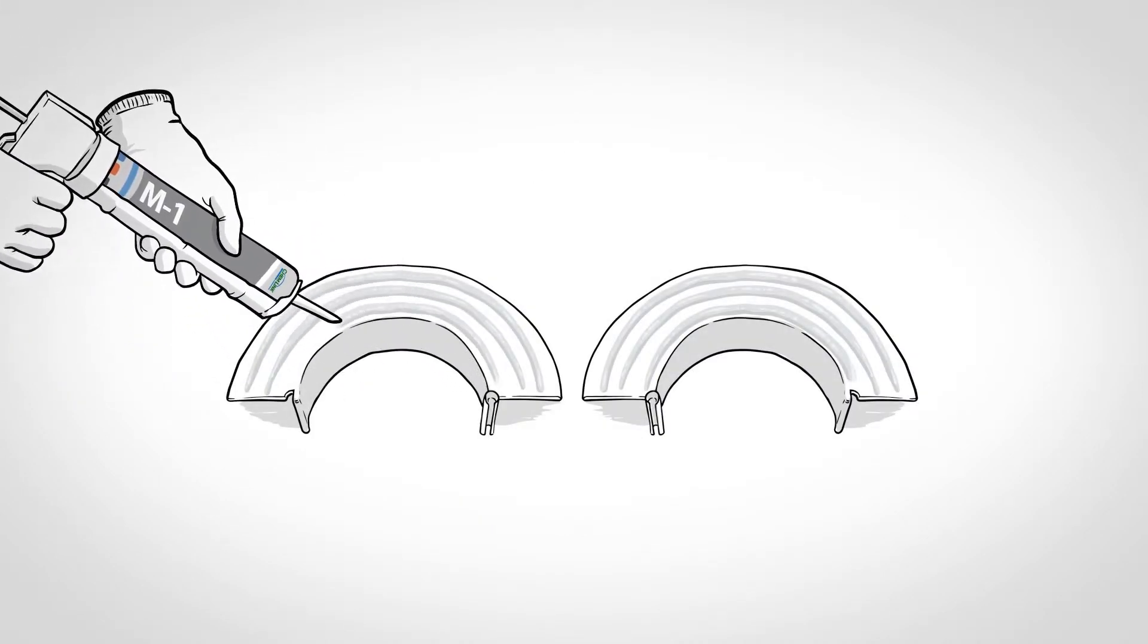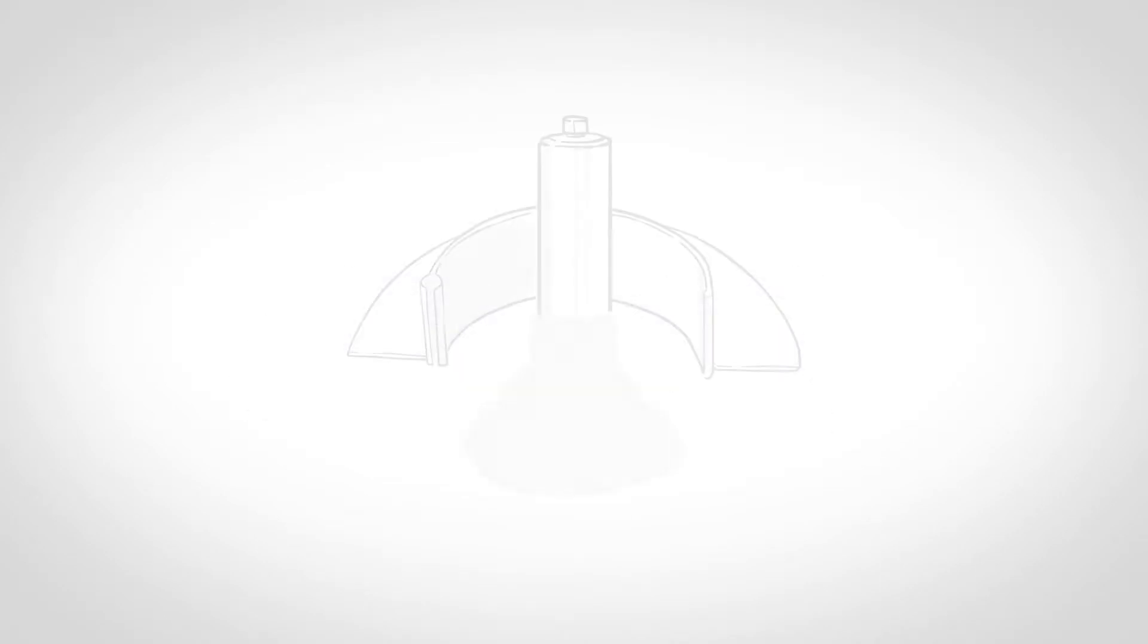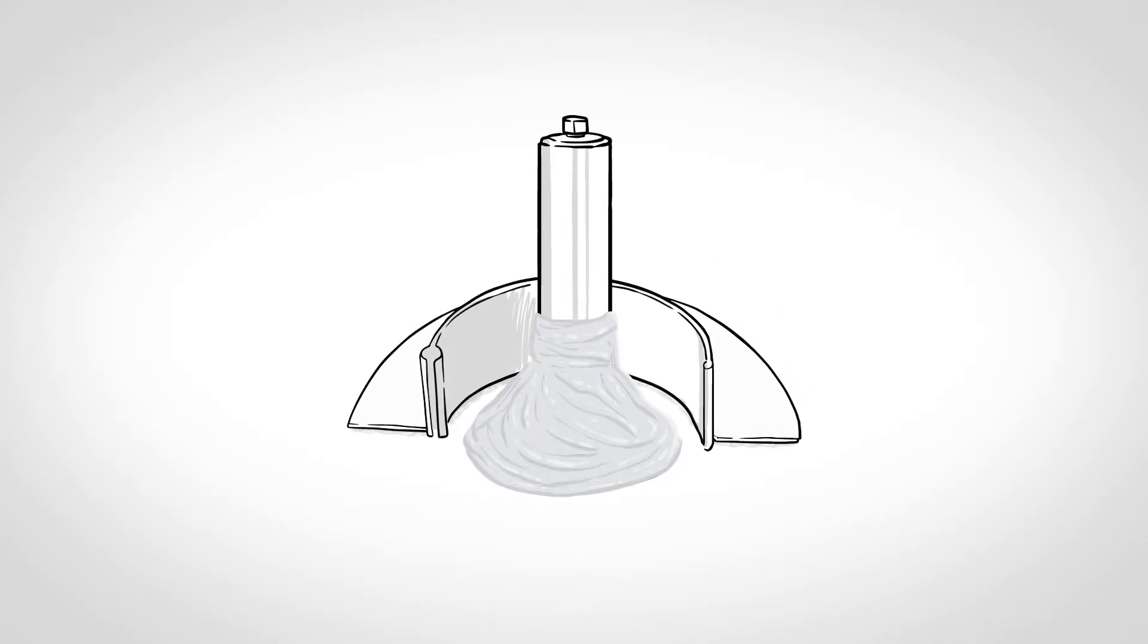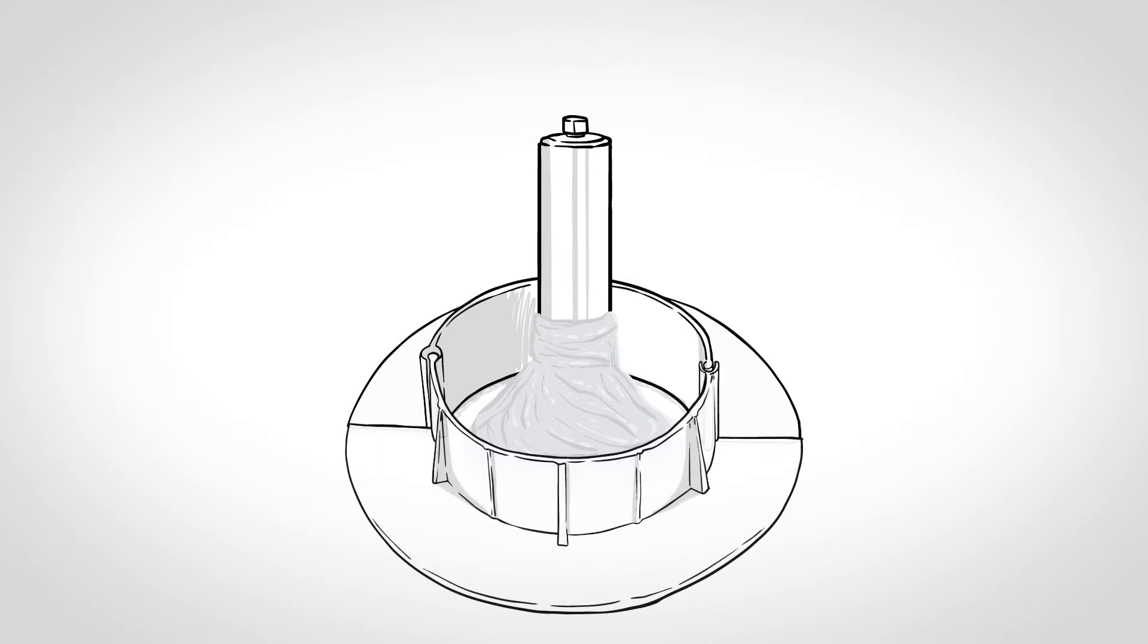Next apply three lines of the M1 to the underside of the eCurb. Place the first side down and press down firmly until sealant extrudes out. Place the second piece to complete the circle, ensuring the two halves are locked together.